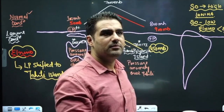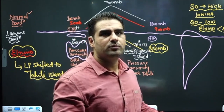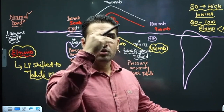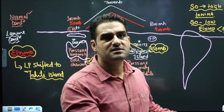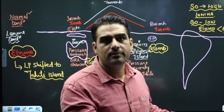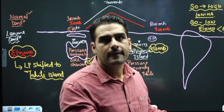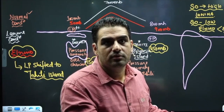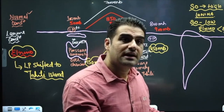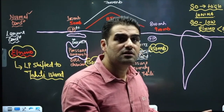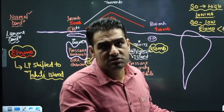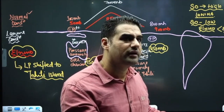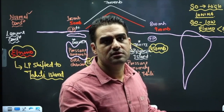In the exam, they will simply ask: what is Southern Oscillation? High Southern Oscillation means La Niña; low Southern Oscillation means El Niño. When it is low Southern Oscillation, we call it El Niño Southern Oscillation — ENSO.